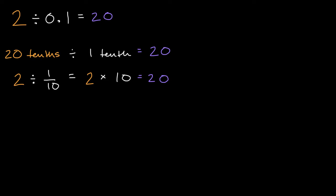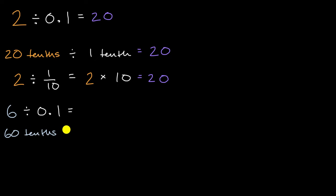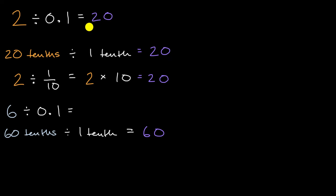Let's do another example. What is six divided by one tenth? Pause this video and see if you can figure that out. Well, you could do the same idea. Six wholes is equal to how many tenths? It's equal to 60 tenths. So rewriting this as 60 tenths divided by 1 tenth: if I have 60 of something and divide it into groups of one of that something, I'll have 60 equal groups. So this equals 60.